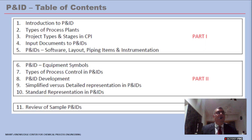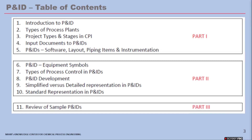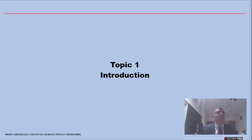The P&ID is a very important topic — it is the core document of a chemical engineer's job as a process engineer. Because of its depth, it has been broken up into three parts. Today's webinar covers Part One: introduction, types of process plants, project types and stages, input documents, P&ID software layout, piping items, and instrumentation. Parts Two and Three will be separate webinars.